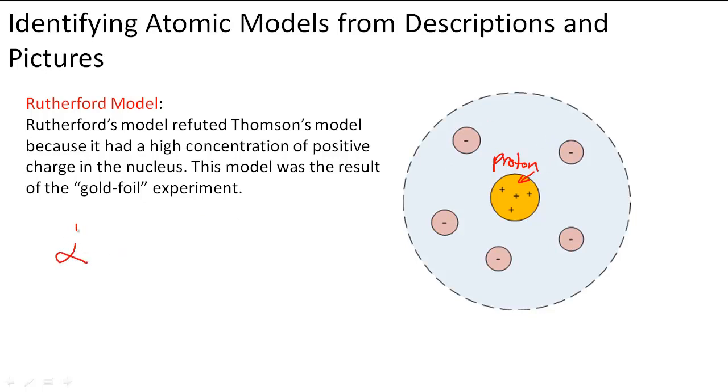How he found that out was doing his gold foil experiment. He fired alpha particles, which have a positive charge, at a gold foil sheet. What he expected to happen was that this charge, because there's nothing to stop this charge, would go straight through. And that happened. There was some of the charge that went straight through.